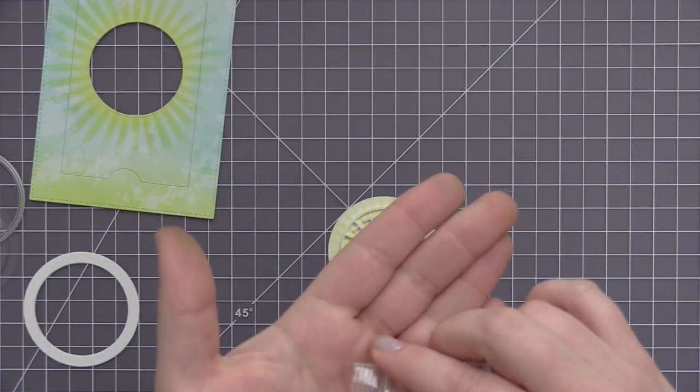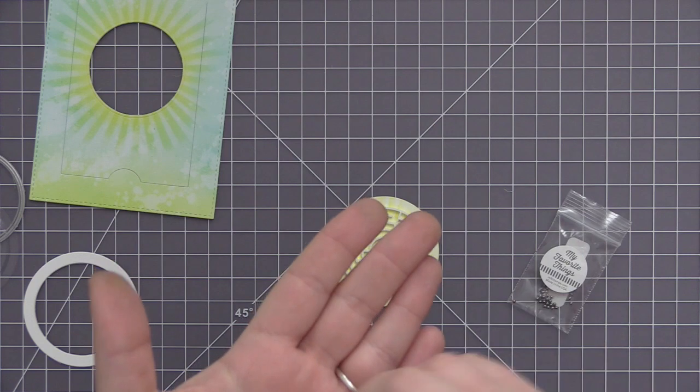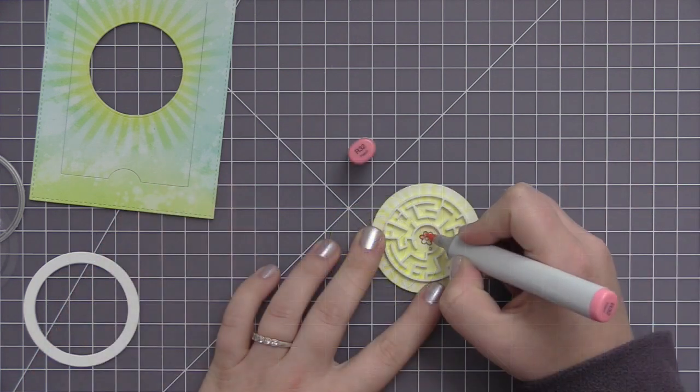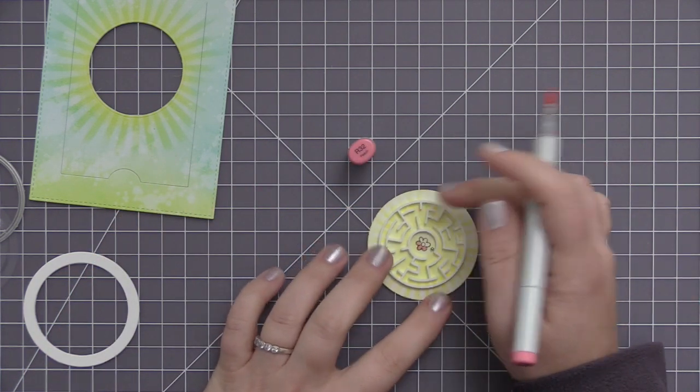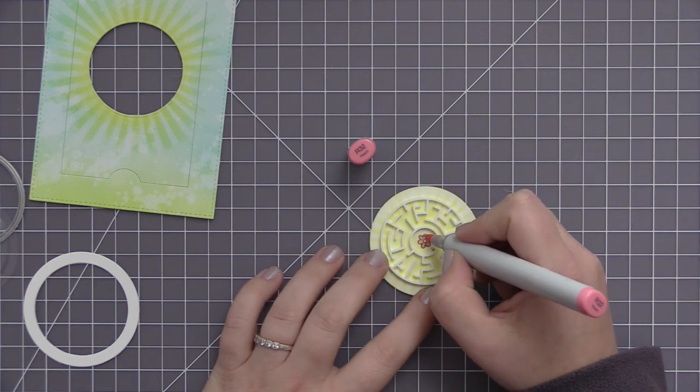Once I had that done I took the maze piece and added it to the circle. I used a little tiny bit of adhesive on the back of that maze just to make sure it doesn't shift around at all, because I want that little flower to stay in the center.